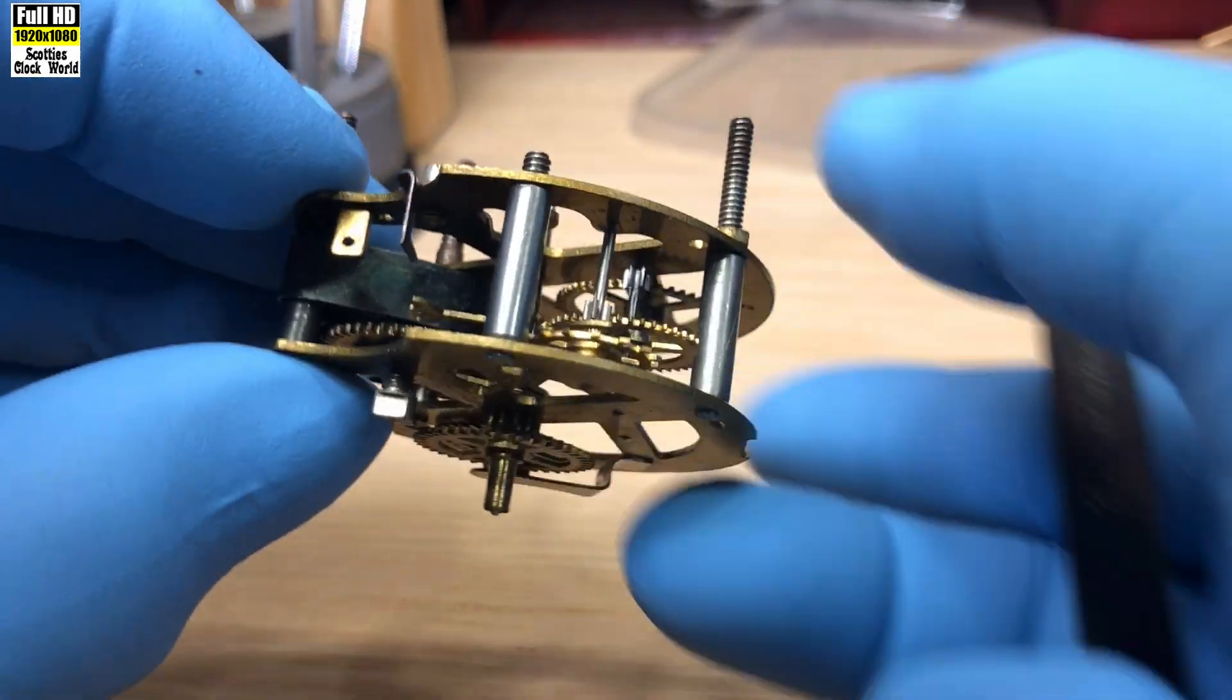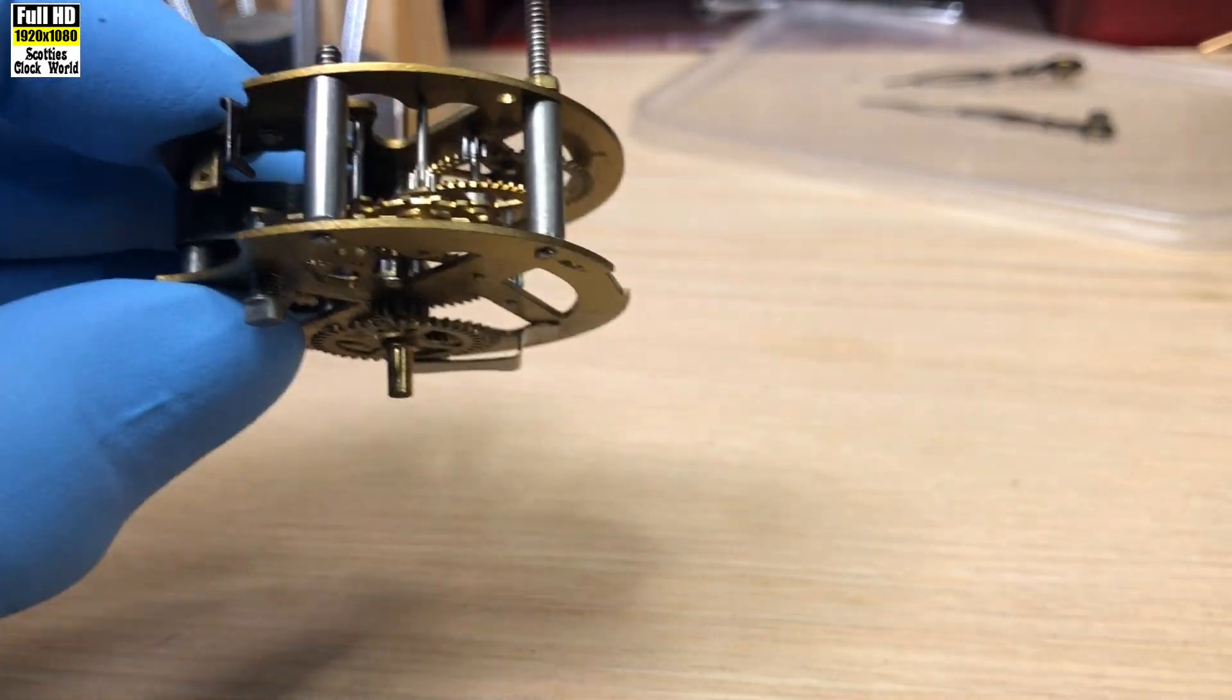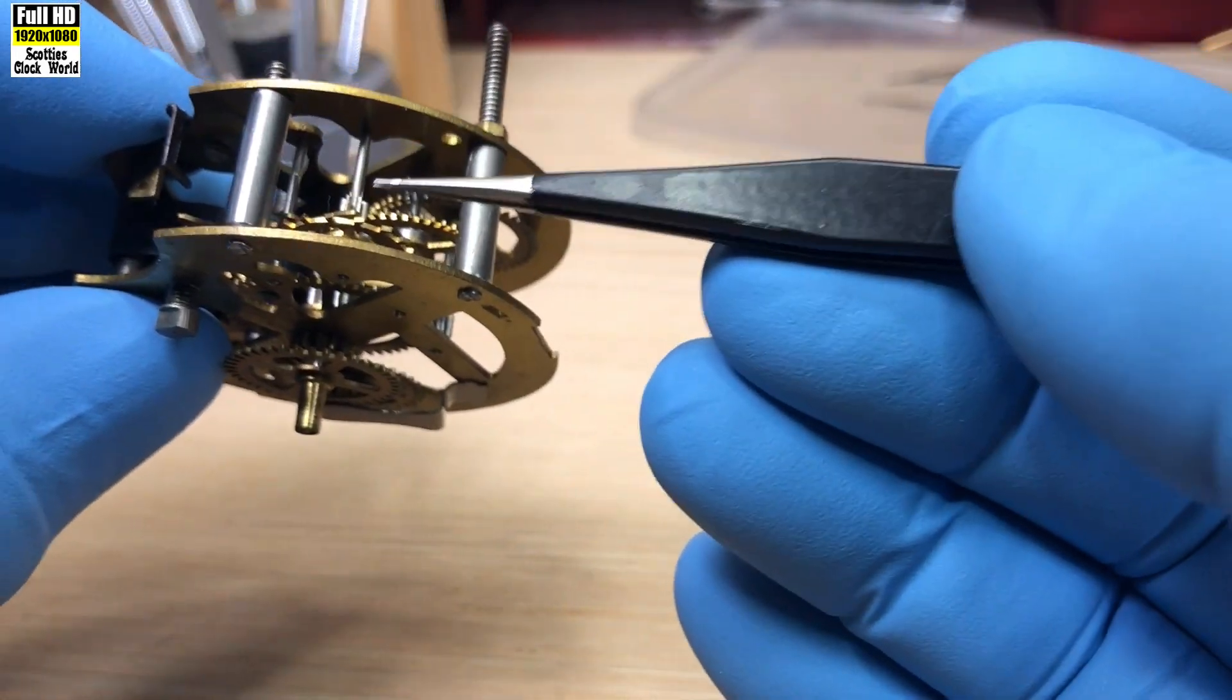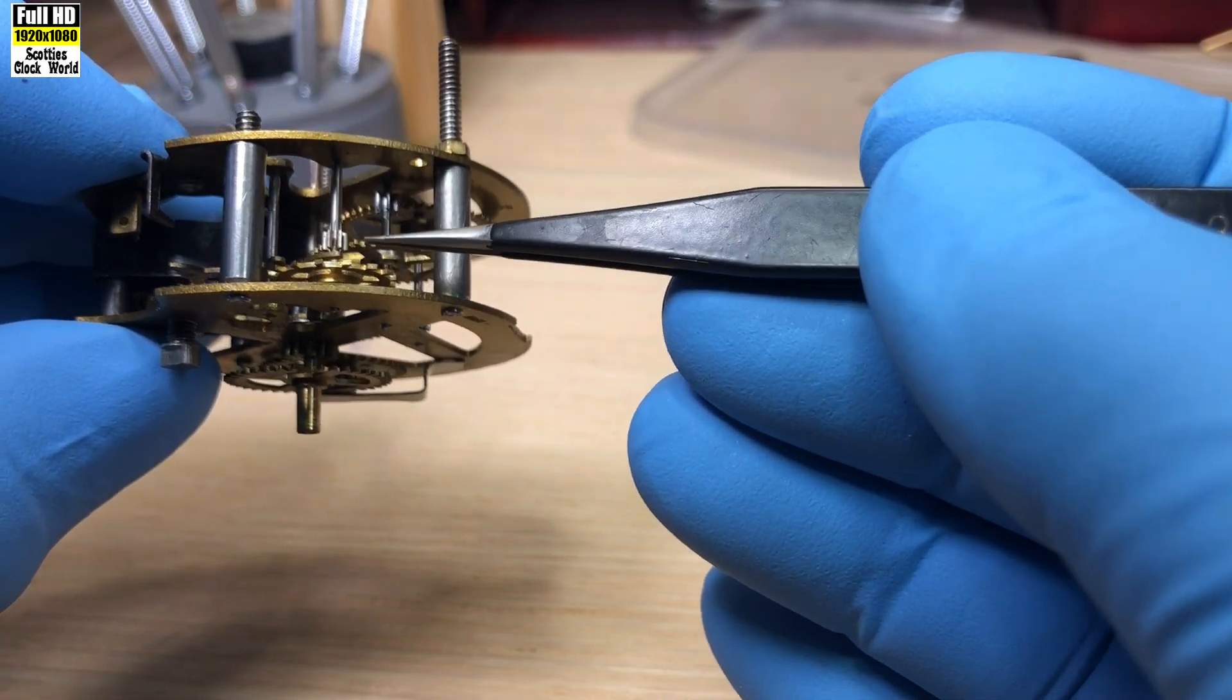What we're going to do today is check out the hairspring and install it into the movement. This piece here is the escape wheel.